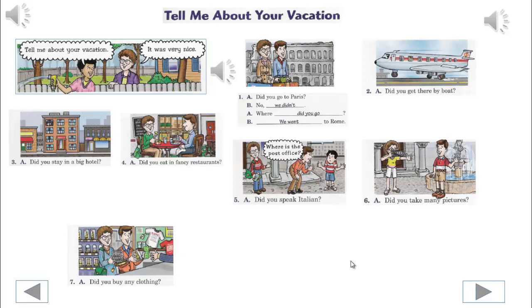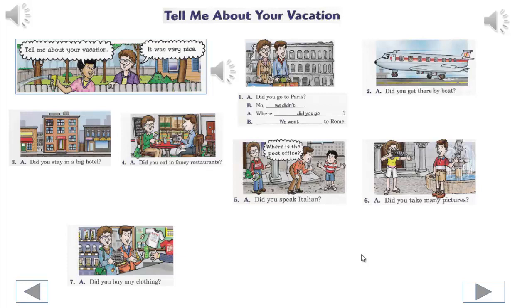Tell me about your vacation. It was very nice. Listen to exercise 1. Did you go to Paris? No, we didn't. Where did you go? We went to Rome.